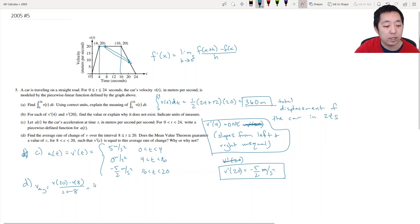Over 4 seconds—yeah, it's like 10 minus v of 8, which is 20, over 12. That's equal to negative 5 over 6 meters per second squared. Okay, that's the average rate of change of v.